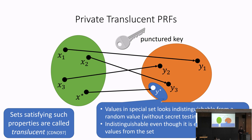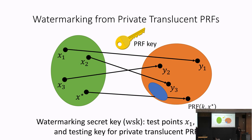To summarize: you can give out a punctured key. When used to evaluate at the punctured point, you always land in the special subspace. The adversary cannot tell when it gets a random element from the subspace whether it is in or out of the subspace, but there is a secret testing key that can check for membership. All these properties hold assuming the adversary does not possess the secret testing key.